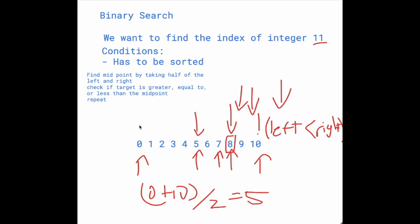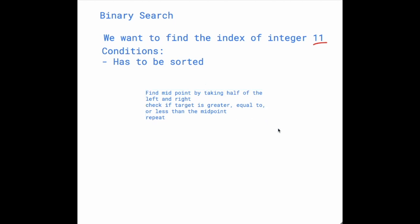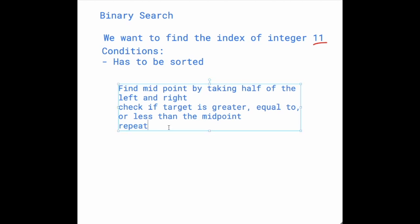And so yeah, that's basically the implementation for binary search, and I'll just write it out really quick. So I guess I already have it written here. Yeah, so take the midpoint by taking half of the left and right, or in other words, taking the average. Check if the target is greater than or equal to or less than the midpoint, then you keep repeating.